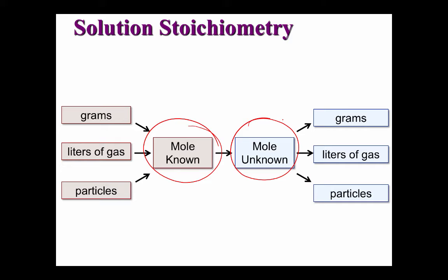We've also learned about a variety of different units that can be converted into moles. We can go from grams of a substance to moles. If a gas is at STP, we can go from liters to moles using the conversion 1 mole equals 22.4 liters. Even if the gas is not at STP, its volume can be calculated using the ideal gas law, PV equals NRT.